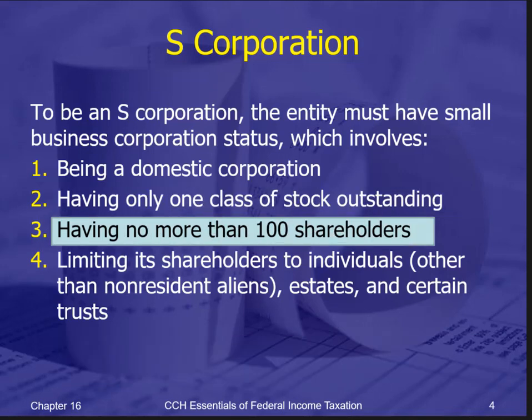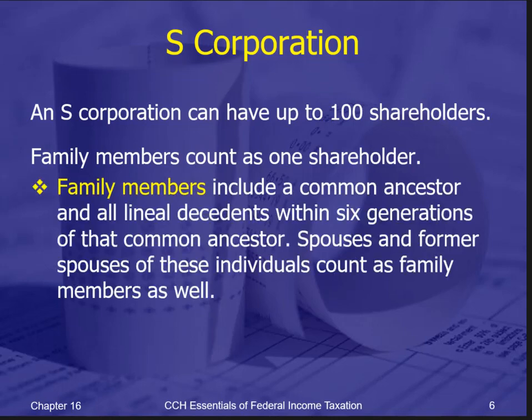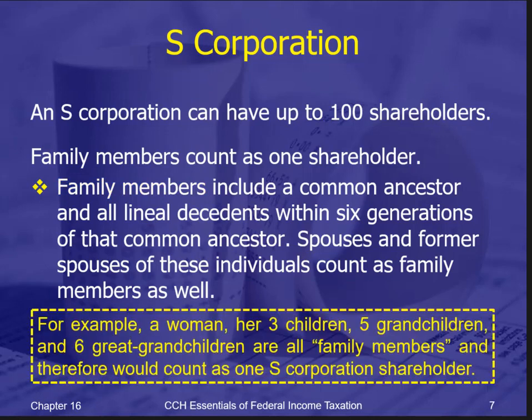No more than 100 shareholders sounds easy, especially since a couple of years ago they decided that all family members count as one shareholder. That includes all kinds of descendants, ancestors, spouses, and former spouses — your children, grandchildren, great-grandchildren. So 16 people could count as one shareholder, making it really not hard to stay under the 100 shareholder limit.